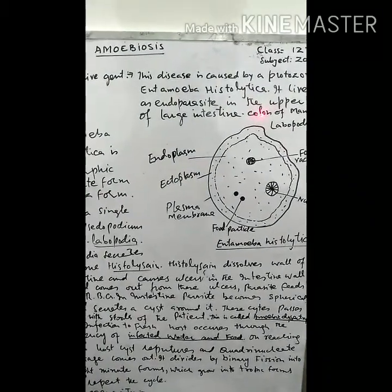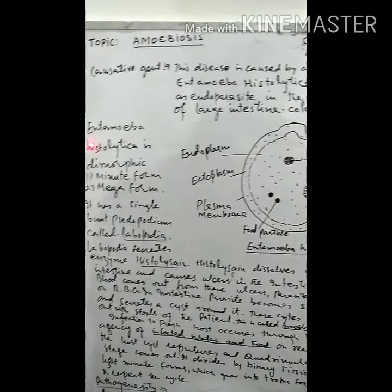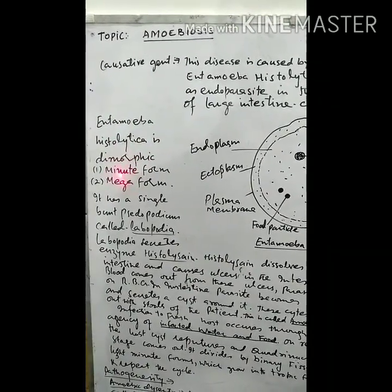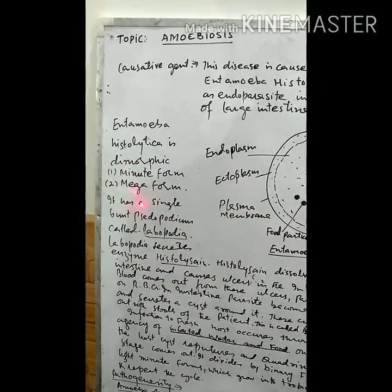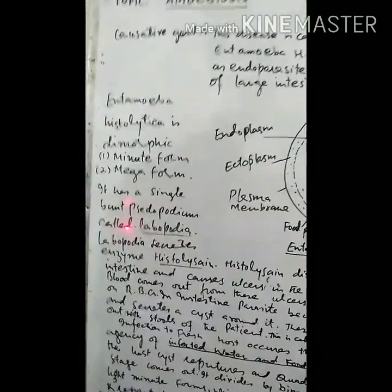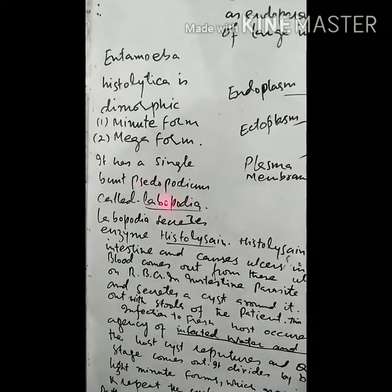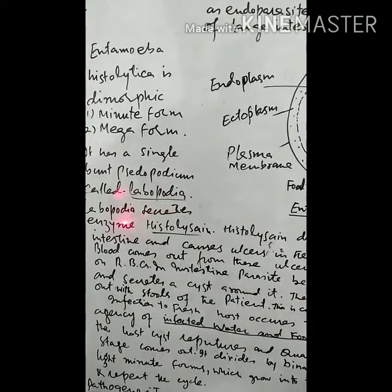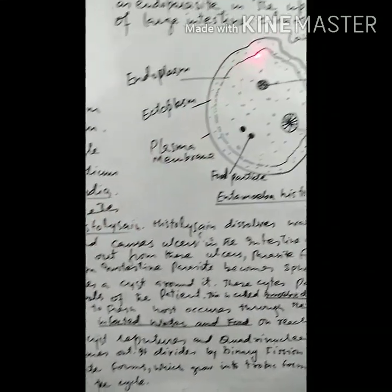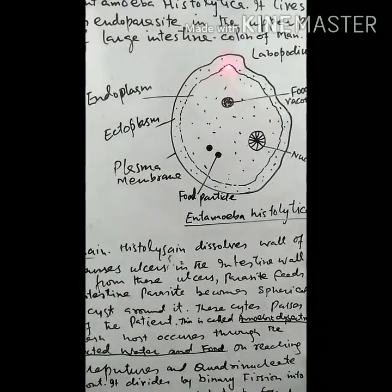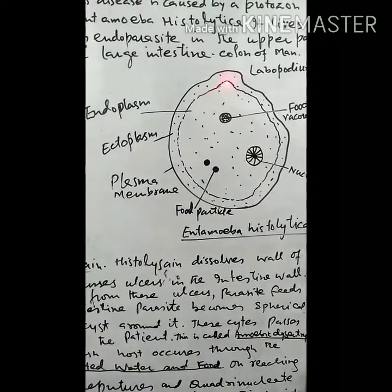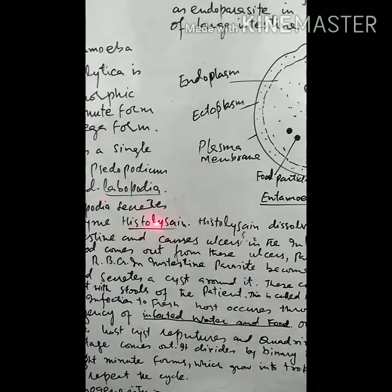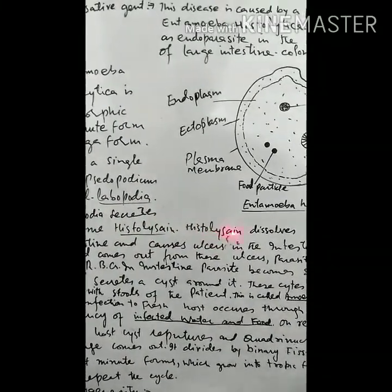Entamoeba histolytica has two forms: a minor form and a male form. It has a single blunt pseudopodium called lobopodia. This pseudopodium is called lobopodia, and lobopodia secretes an enzyme called histolysine.